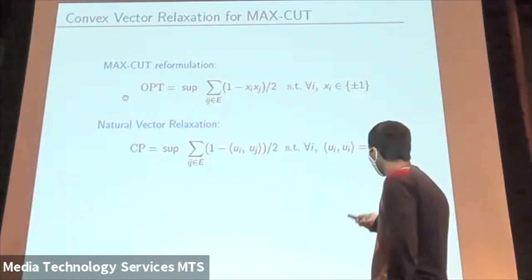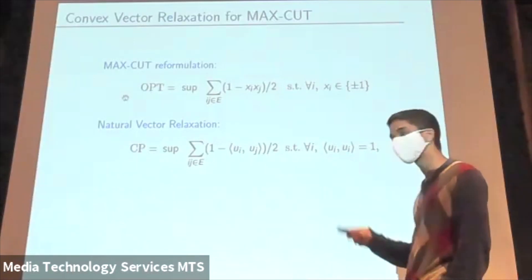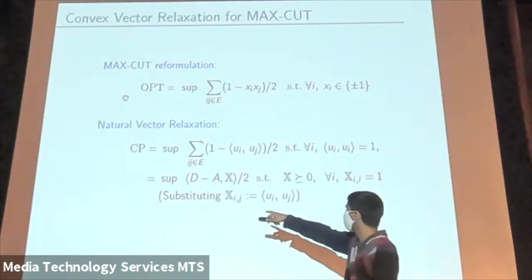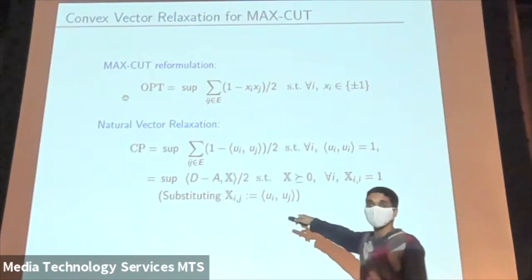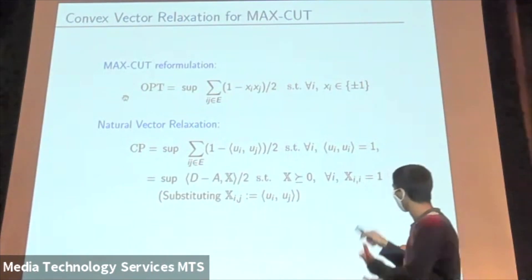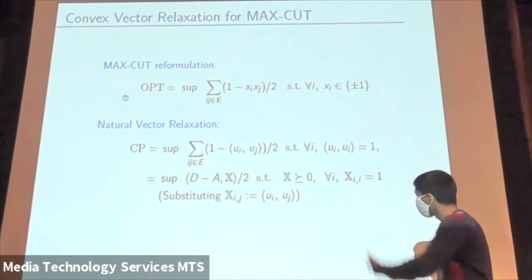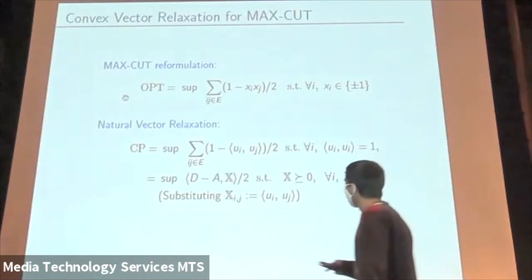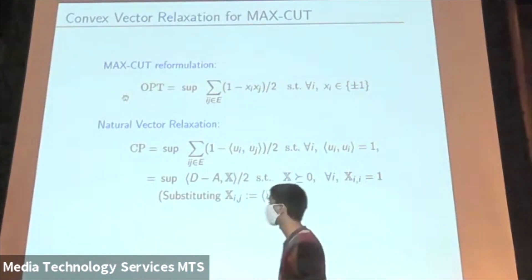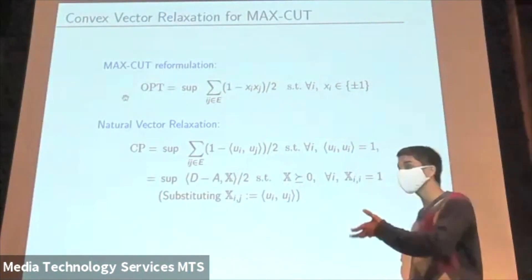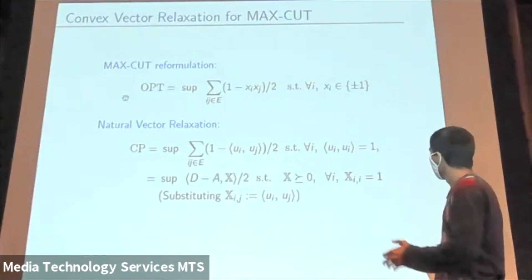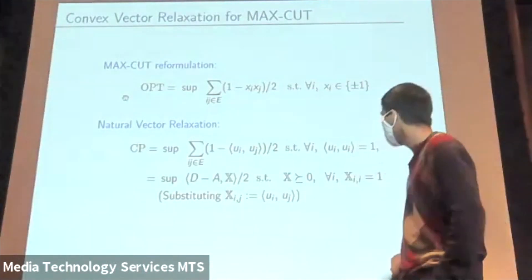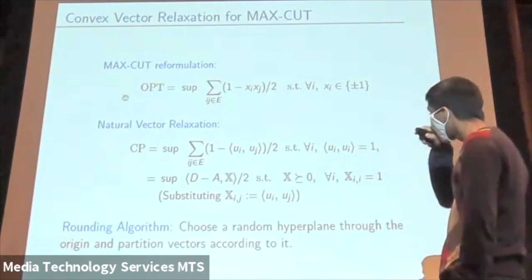I'll reformulate this in a way that makes it more evident it's convex. Making the substitution xij equals the inner product of ui and uj, we see that we're searching for a matrix x that's PSD, has diagonal entries equal to 1, and its inner product with some matrix needs to be maximized. So we're maximizing a linear function in x over the intersection of the positive semi-definite cone and the subspace.